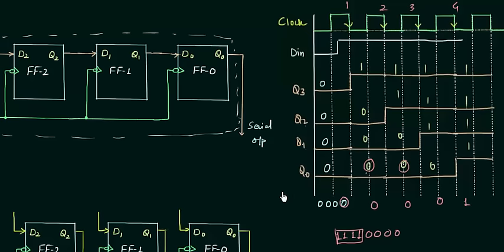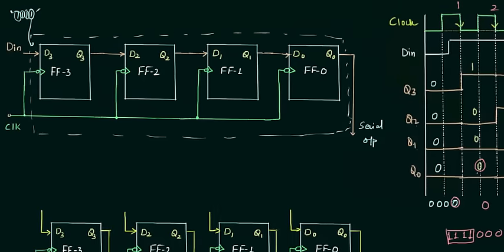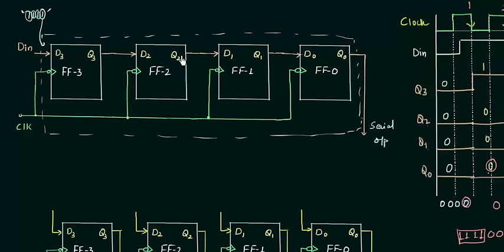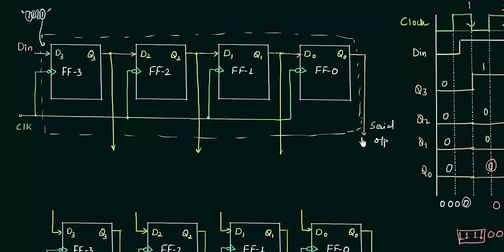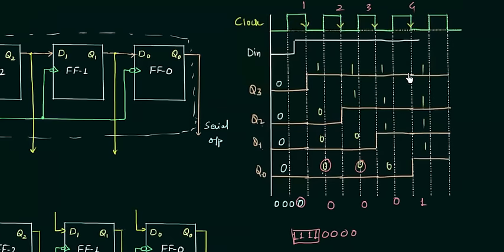This is a drawback because we require more clock pulses. In serial input parallel output mode, the data is still fed in serial manner bit by bit, but the output is not serial. To achieve parallel output, I will take Q3, Q2, Q1, and Q0 all as outputs. So instead of having one output from the IC, I have 4 outputs. Once we have stored the data we want to store...